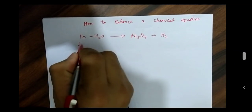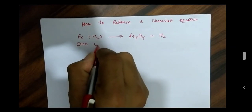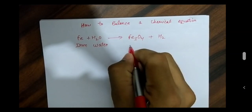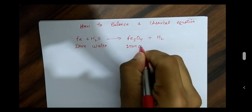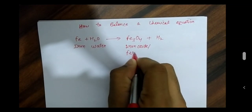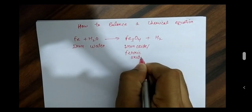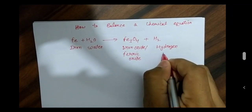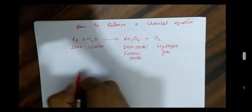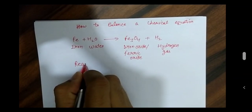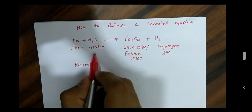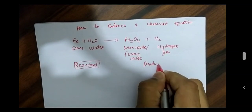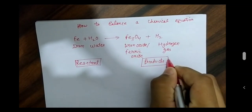Fe is the iron, H₂O is the water. The product Fe₃O₄ is the Iron Oxide or Ferric Oxide, and H₂ is the Hydrogen gas. We have reactants on the left hand side and products on the right hand side.